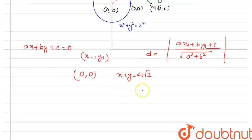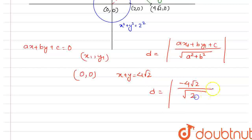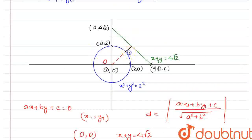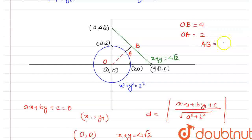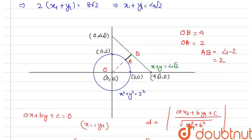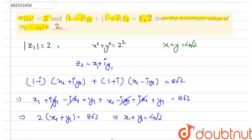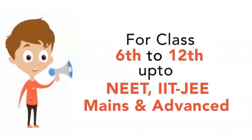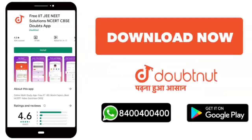Substituting (0, 0) into the formula: the distance equals |0 + 0 − 4√2| divided by √(1² + 1²) = 4√2 / √2 = 4. Naming the center O, and point A on the circle, and point B the foot on the line: OB = 4 and OA = radius = 2. Therefore AB = OB − OA = 4 − 2 = 2. So the minimum value of |z1 − z2| is 2.